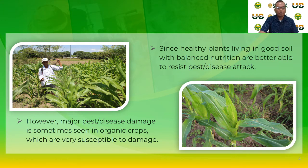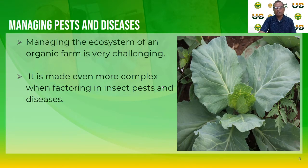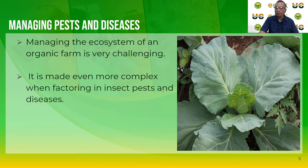Major pest and disease damage is sometimes seen in organic crops, which are very susceptible to damage. However, healthy plants living in good soil with balanced nutrition are better able to resist pest and disease attacks. Managing the ecosystem of an organic farm is very challenging, even more complex when factoring in insect pests and diseases. Since the use of synthetic pesticides is prohibited under organic systems, the focus should be on prevention of pest outbreaks rather than coping with them after they occur. No single method is likely to be adequate for all pests, so it requires a combination of control methods.